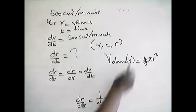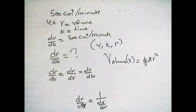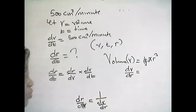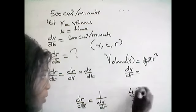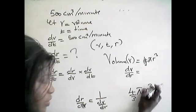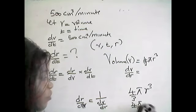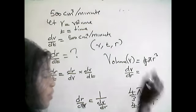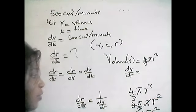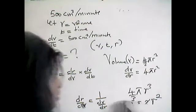We differentiate V = (4/3)πR³. We have two variables V and R. Differentiating: dV/dR equals (4/3)π multiplied by 3R², and the 3s cancel, giving us dV/dR equals 4πR².